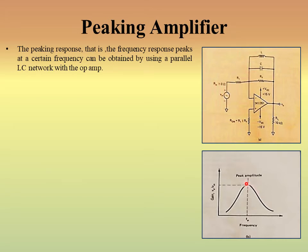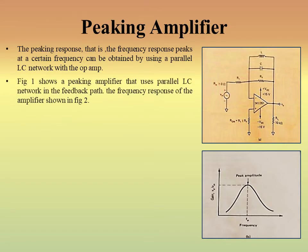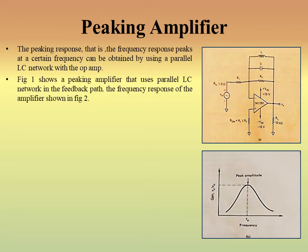The amplifier that produces such a peak is known as a peaking amplifier. As shown in the circuit diagram, the input is provided at the inverting end with feedback, and along with the feedback an LC parallel circuit combination is also connected in the feedback region. The peaking response peaks at a certain frequency and can be obtained by using a parallel LC network with the op-amp. The peaking amplifier uses a parallel LC network in the feedback path, and the output frequency response is shown in the second figure.